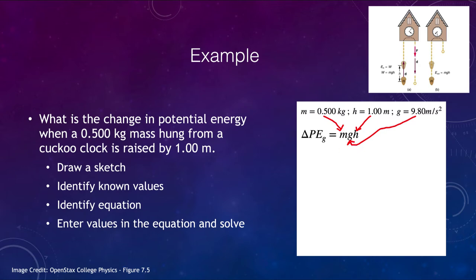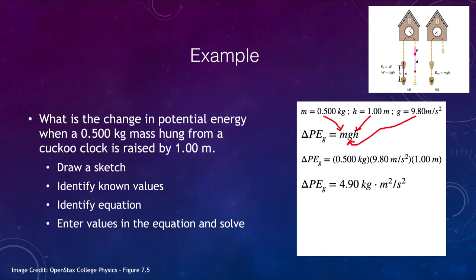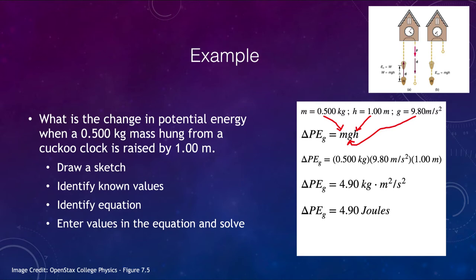We're looking for the change in potential energy, given by mass times gravitational force times height. We know all three of those numbers, so we can put those values into our equation. Multiplying the three together, we get 4.90 kilogram meter squared per second squared. That is also equal to a Newton meter — a kilogram meter per second squared times a meter — which is a joule. So the change in potential energy is 4.90 joules — that is how much energy is now stored.